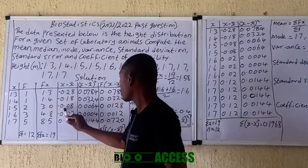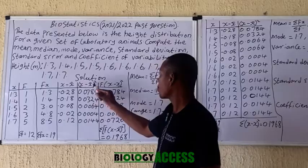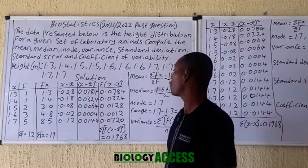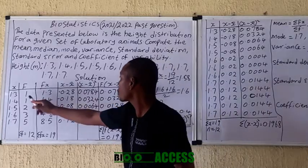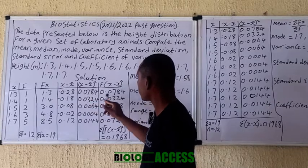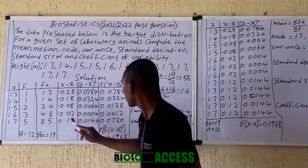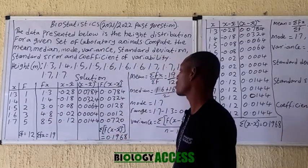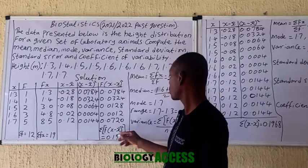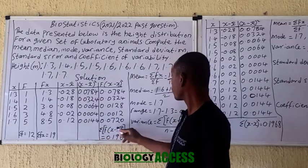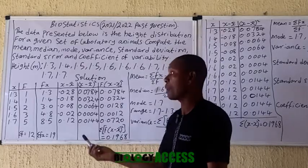Then you square each deviation value — remember, squaring a negative value always gives a positive result. Next, find f(x − x̄)²: multiply the frequency by each squared deviation. For example, multiply frequency 1 by the squared deviation, frequency 2 by the next, frequency 3 by the next, and so on. Sum all those products to get the summation of f(x − x̄)², which gives you the value needed for variance. That completes the first method.